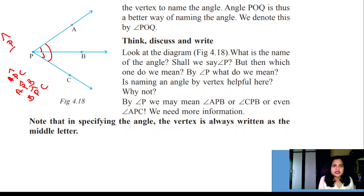That's why, how we name angles - we take the vertices and sides. APB is one angle, BPC is one angle, and APC is also another angle. We name the angles like this.